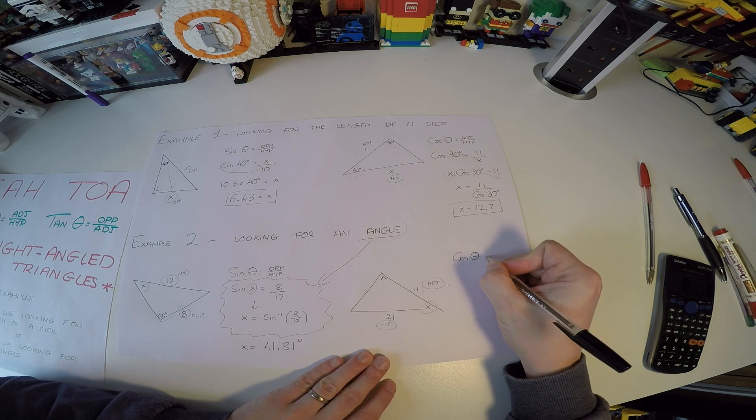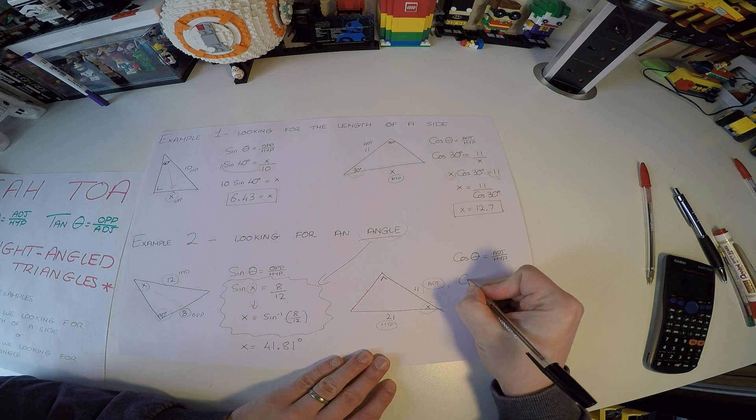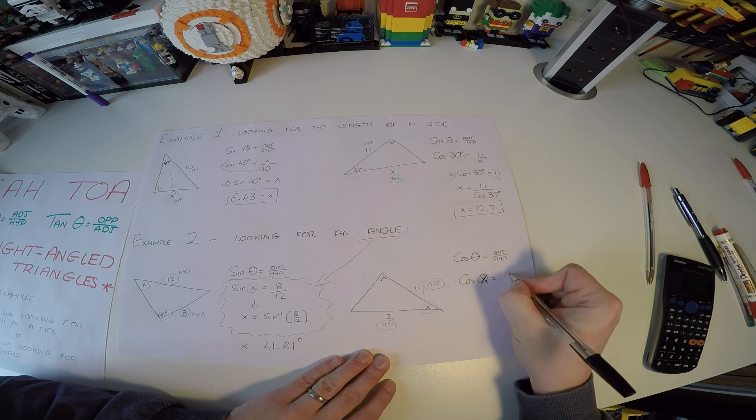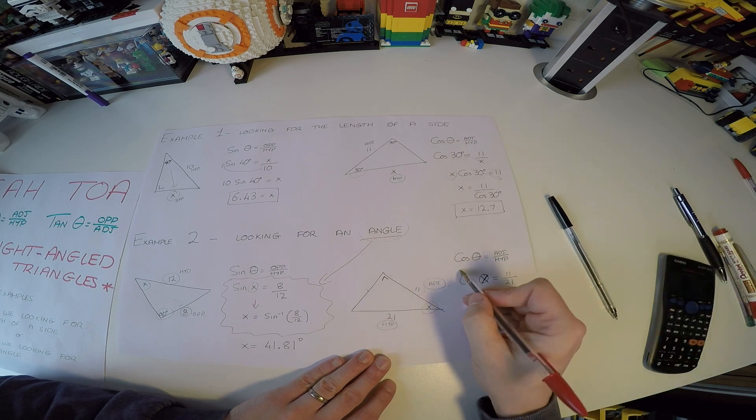So the cosine of theta is equal to adjacent over hypotenuse. So now we're saying the cosine, and we don't know the angle. So theta is going to be X. And the adjacent is 11. And the hypotenuse is 21. And now, our big step comes in here.